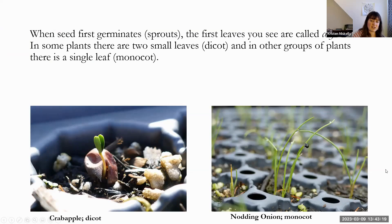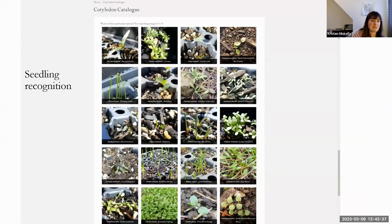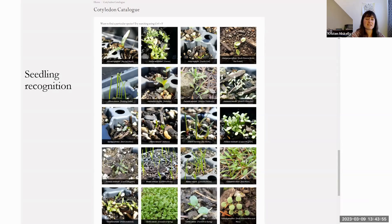When seeds first sprout, you get little cotyledons. You can have dicots or monocots — here's a Pacific crabapple and a nodding onion as examples, both with the fruit still visible. We're trying to help people understand what their little sprouts are, because everyone sows seeds and then wonders what's coming up. This seedling identification tool is meant to help you match a picture of your seedling to what you might have sown — it's an ever-growing tool with lots still to be added.